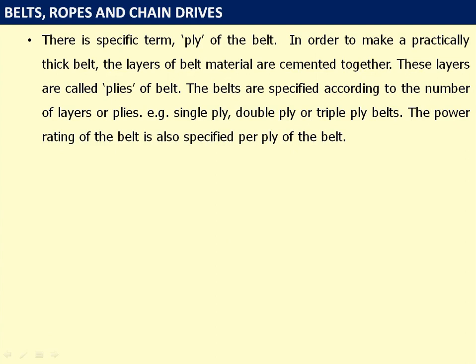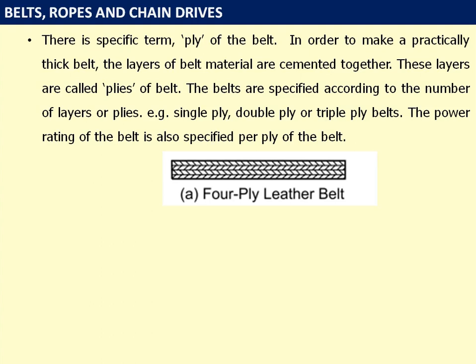There is a specific term: ply of the belt. Similar to plywood, which consists of thinner wooden plies bound together for good strength, in order to make a practically thick belt, layers of belt material are cemented together. These layers are called plies of the belt. Belts are specified according to the number of plies — single ply, double ply, or triple ply. The power rating of the belt is also specified per ply. For example, a 4-ply leather belt has 4 plies bound together.